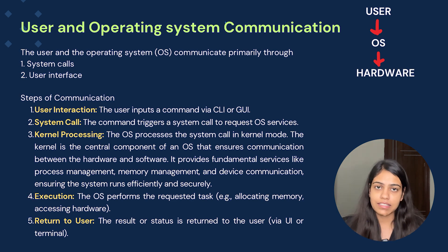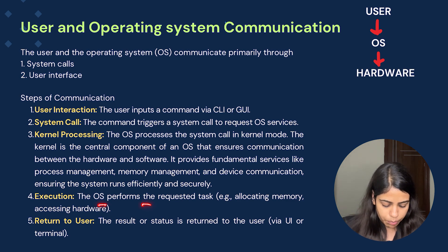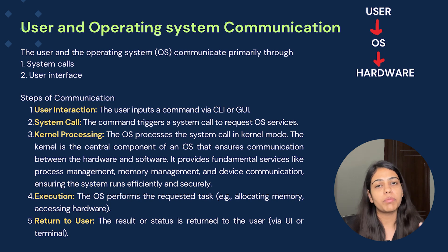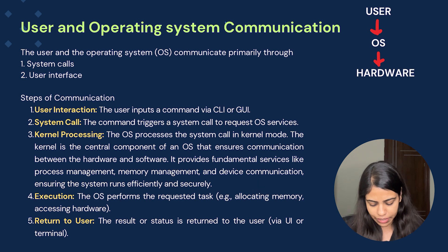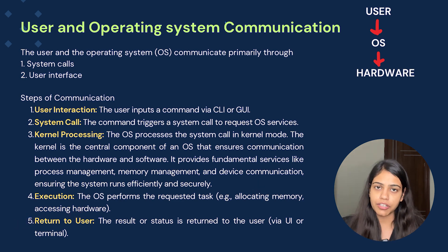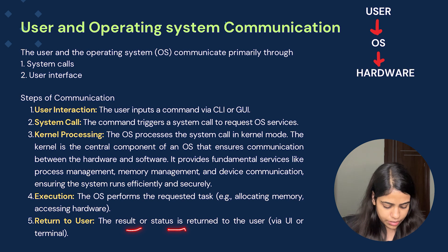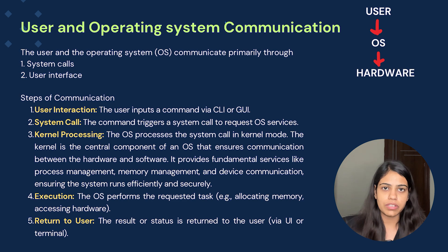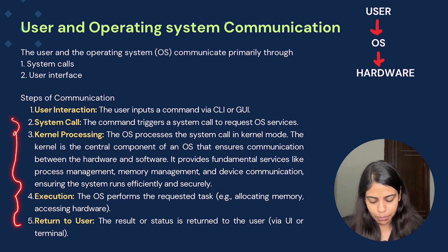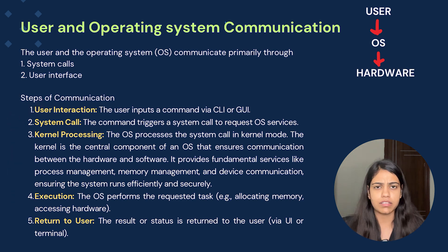The fourth step is execution — the operating system performs the requested task. Since there is a system call provided to the OS, it goes to the kernel and then performs the requested task, such as allocating memory or accessing a hardware component. The fifth step is return to user — the result or status is returned to the user via the UI or terminal. You provided an input and you get the processed output. This is how the steps of communication happen between the user and the operating system.